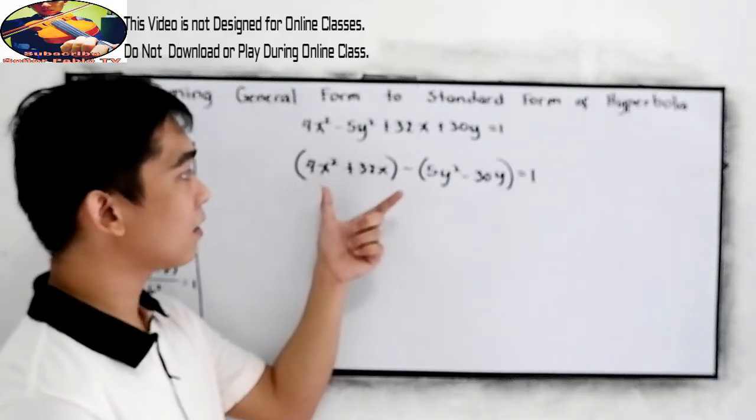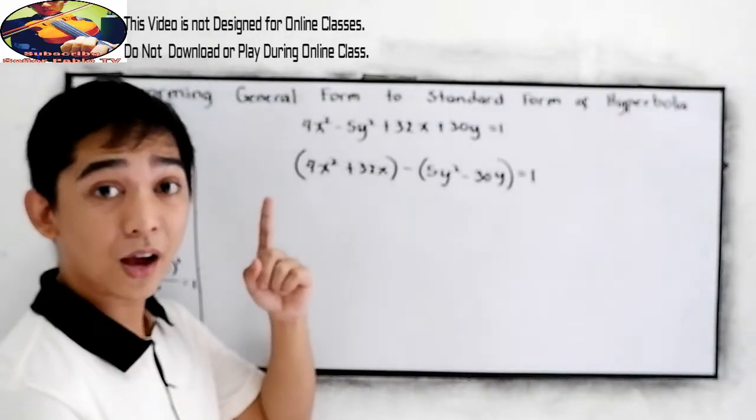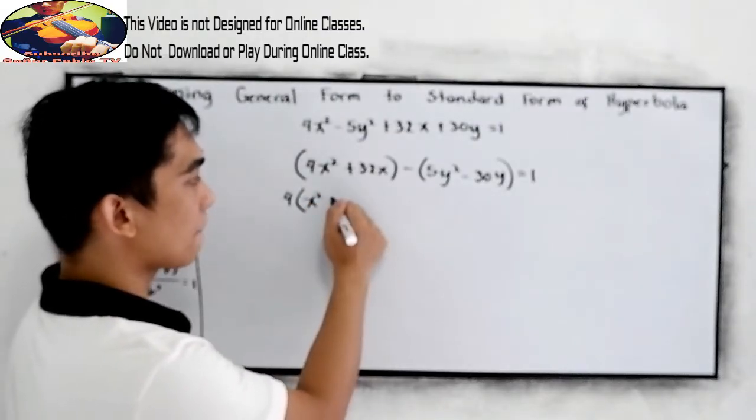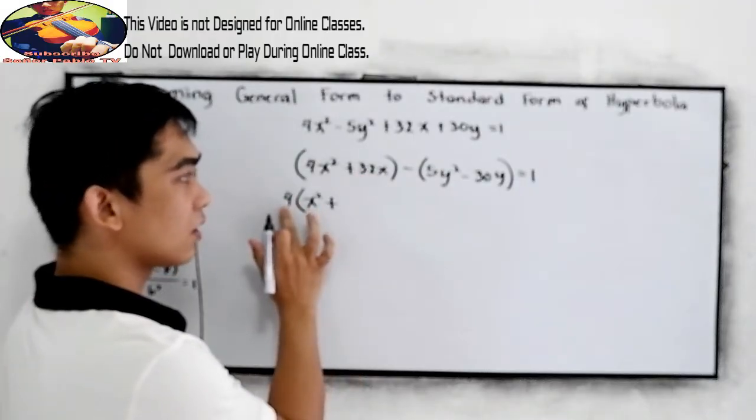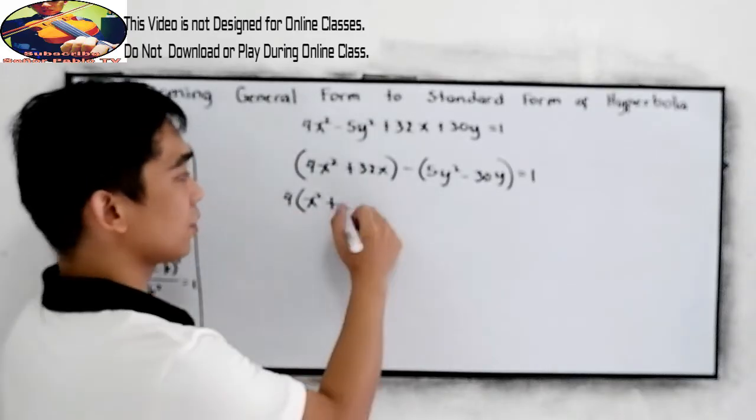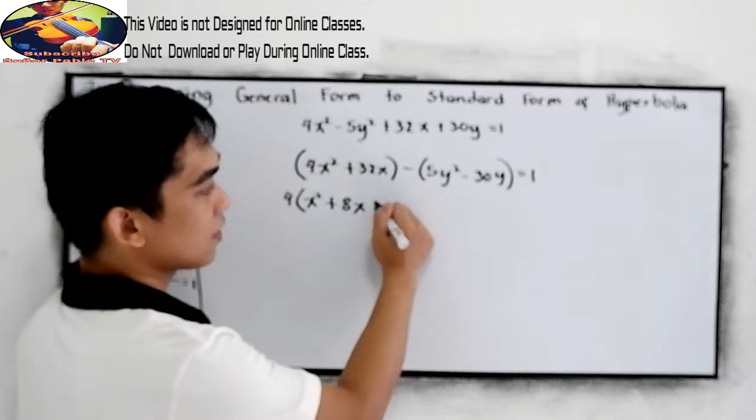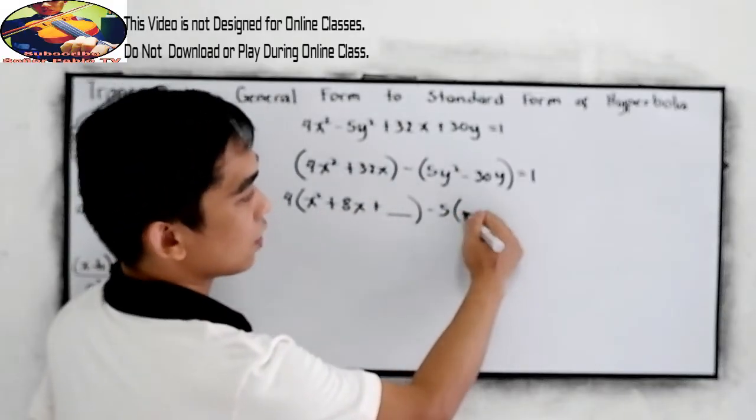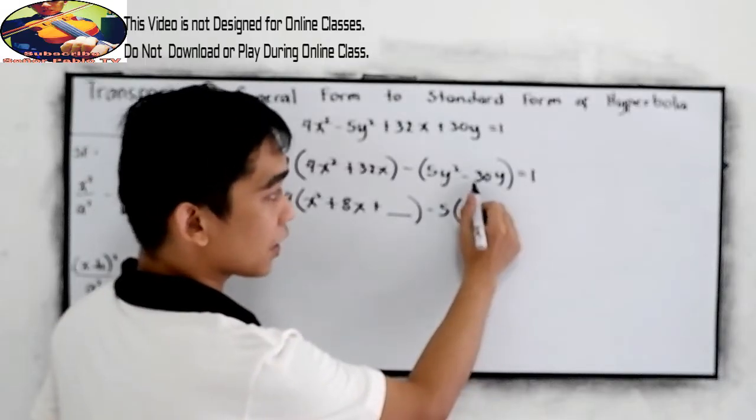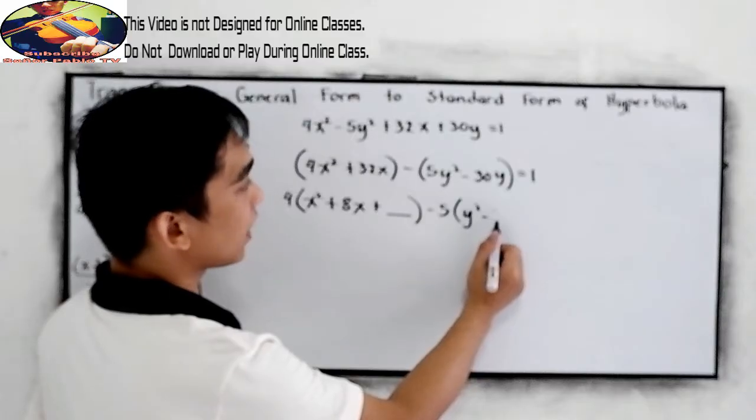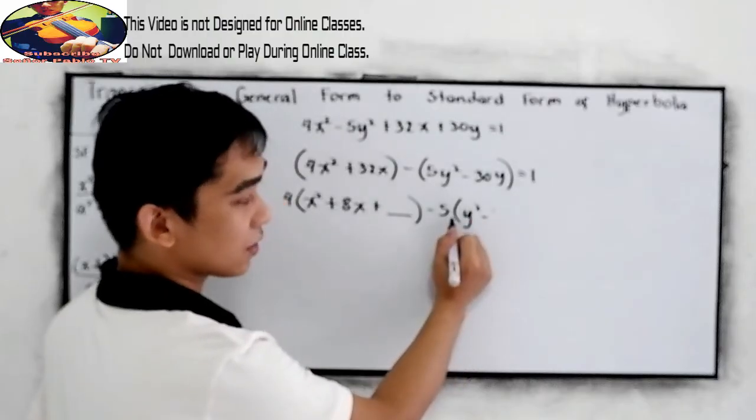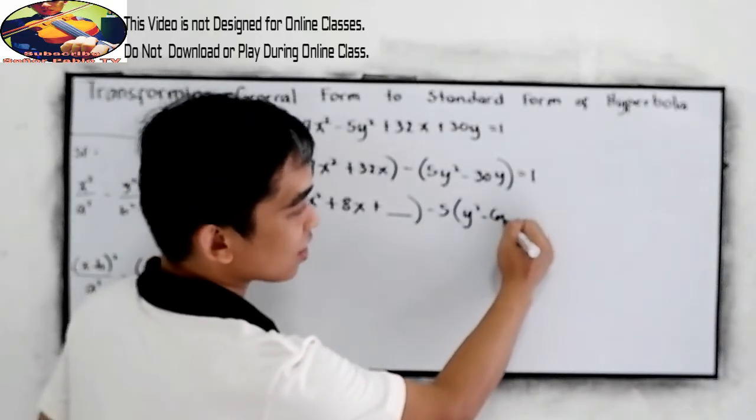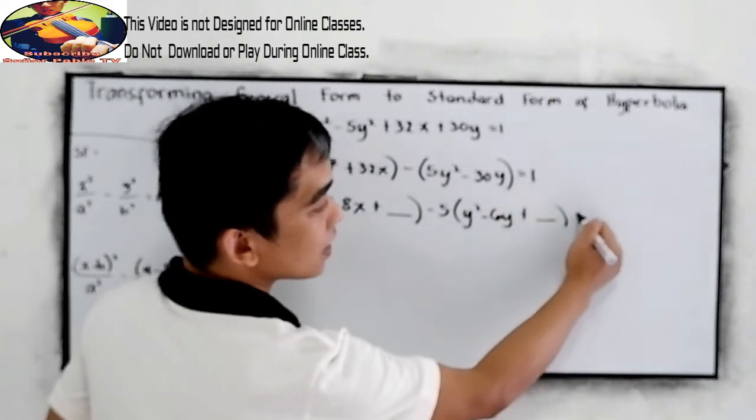And now, let's get first the common factor. So, 4. We have x squared plus 32 divided by 4, that is 8. So, 8x plus blank. Let us write the plus blank to make it a perfect square binomial. Minus, here is 5: 5y squared minus negative 30. Negative 30 divided by 5, that is 6. 6y plus blank is equal to 1.